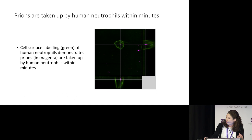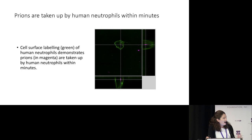From a movie, it's hard to tell what the neutrophils are actually doing with those prions. What you're looking at here is a higher magnification still image. The outside of the cell is colored there in green, the prions in this case are labeled in purple, and on the left is a bird's eye view of that cell — you can see the outside of the cell in green and the prions in purple.